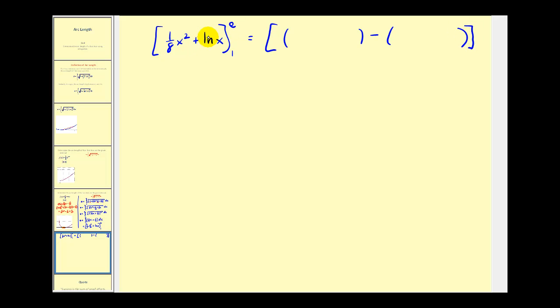So first we'll replace x with e. And then with one. So here we'll have e squared divided by eight plus the natural log of e is equal to one. This would be one-eighth. And natural log of one is equal to zero.